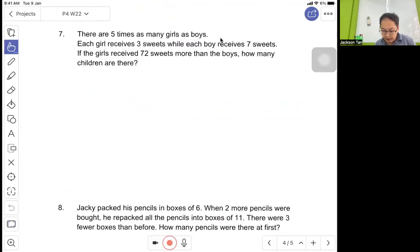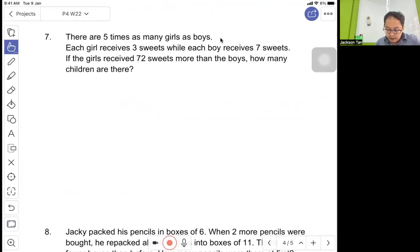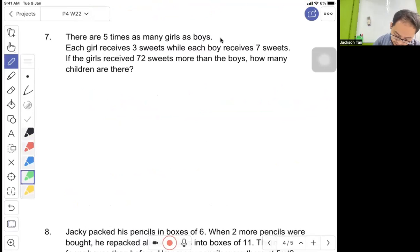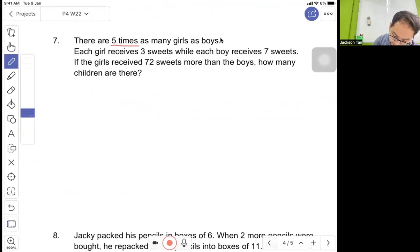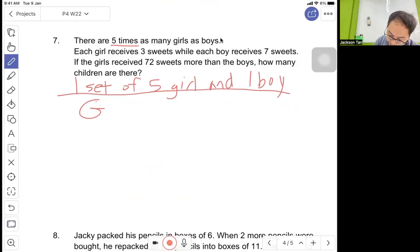Question 7: There are five times as many girls as boys. One set of five girls, there'll be one boy.